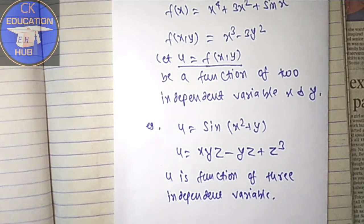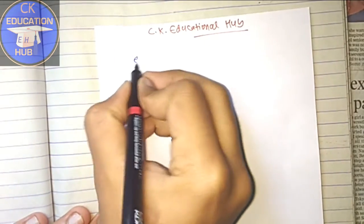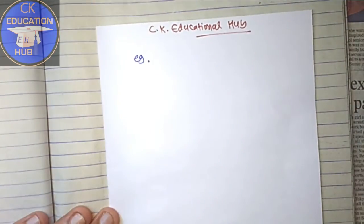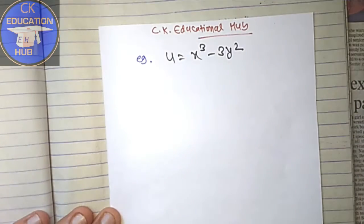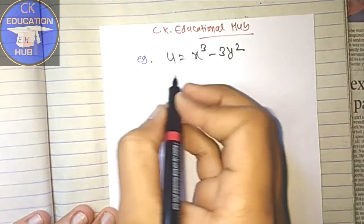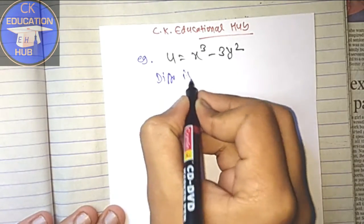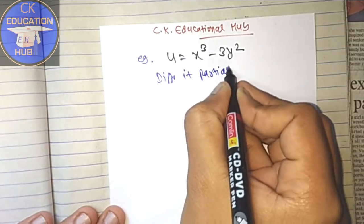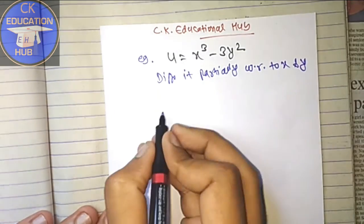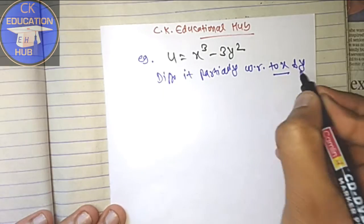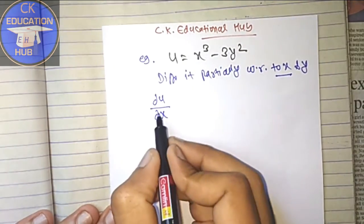Let us take an example: u = x³ - 3y². We have to differentiate it partially. So differentiate it partially with respect to x and y. When we differentiate partially with respect to x, we write it as del u upon del x.